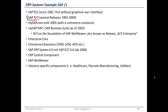Then there was the SAP R3 system. It started in 1992, and R3 is actually still used in companies today because of its quite high reliability.